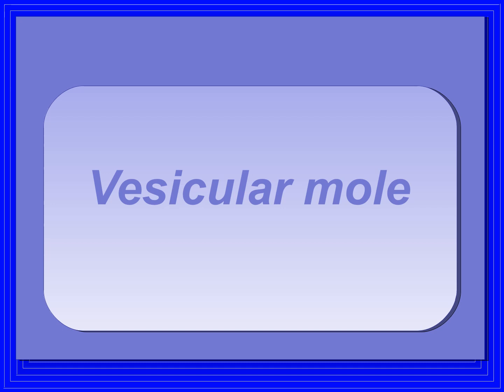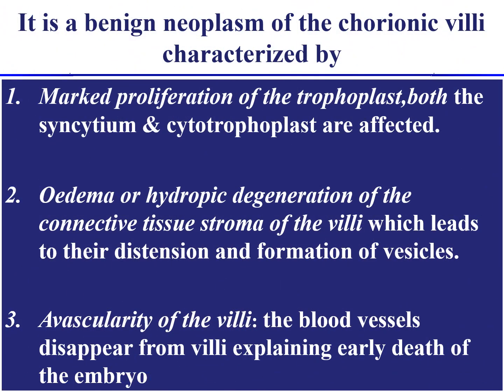Vesicular mole is a benign neoplasm of the chorionic villi, characterized by the proliferation of the trophoblast — both layers, that is syncytiotrophoblast and cytotrophoblast, will get proliferated. There is also edema and hydropic degeneration of the connective tissue stroma of the villi, which leads to distension and formation of vesicles.